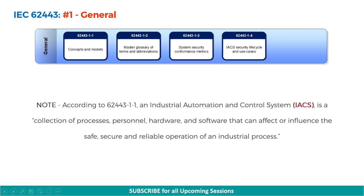Please note that according to 62443.1.1, an industrial automation and control system is a collection of processes, personnel, hardware, and software that can affect or influence the safe, secure, and reliable operation of an industrial process.